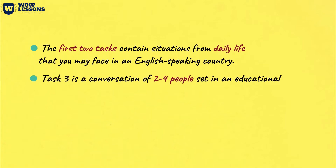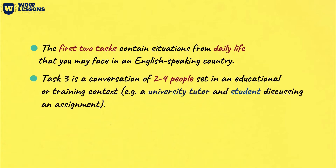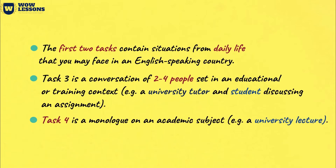The third and fourth sections are a bit more complicated since they usually contain academic assignments. In part three, you will hear a conversation of two to four people. For example, a group of students discussing the implementation of an educational project, or a teacher and student talking about research conducted by the student. The fourth section includes a monologue on any educational topic. For example, it may be a small lecture by a teacher in biology or physics.